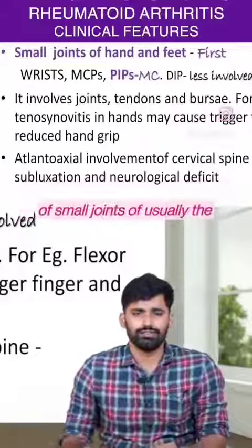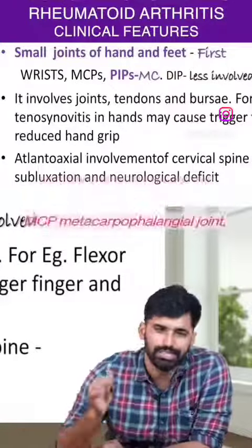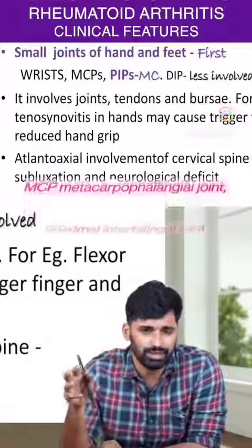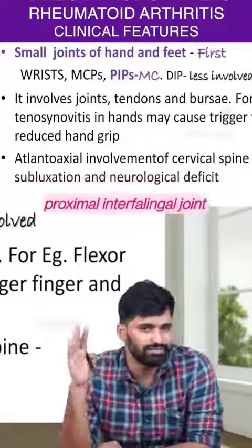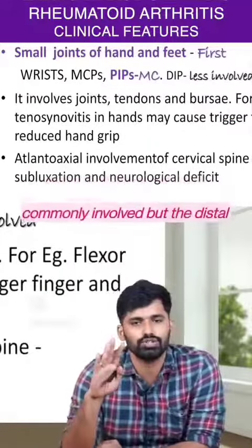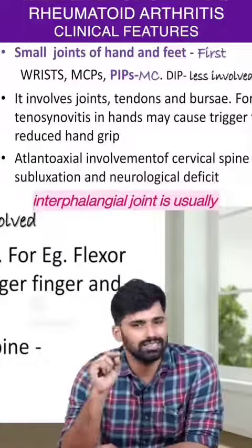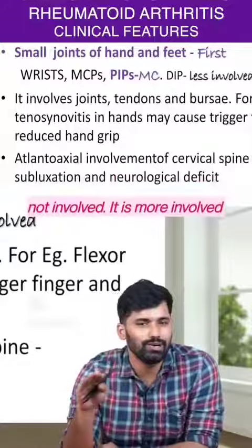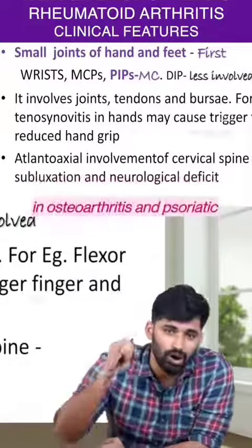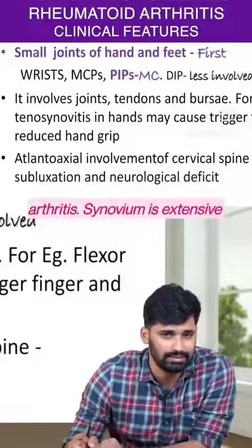Patient presents with arthritis of small joints of hands and feet, usually the MCP (metacarpophalangeal joint), proximal interphalangeal joint, and the wrist joint, which are most commonly involved. The distal interphalangeal joint is usually not involved — it is more involved in osteoarthritis and psoriatic arthritis.